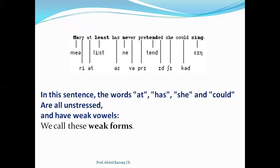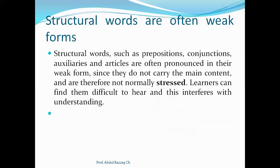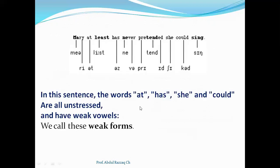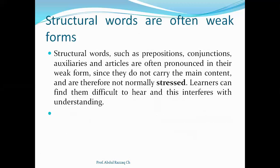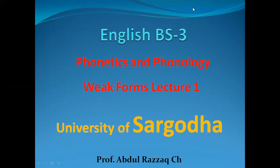This was the first lecture about Weak Forms, in which you studied what weak forms are, the definition, and that grammatical words are mostly unstressed. The unstressed vowels shift to schwa, or sounds like 'a', 'e', or 'u'. We used the example 'Mary at least has never pretended she could sing' — 'at', 'has', 'she', and 'could' are all unstressed weak forms. In the second lecture we will have many more examples of weak forms and strong forms. Keep in touch, share this video with your friends, thank you very much, Allah Hafiz.